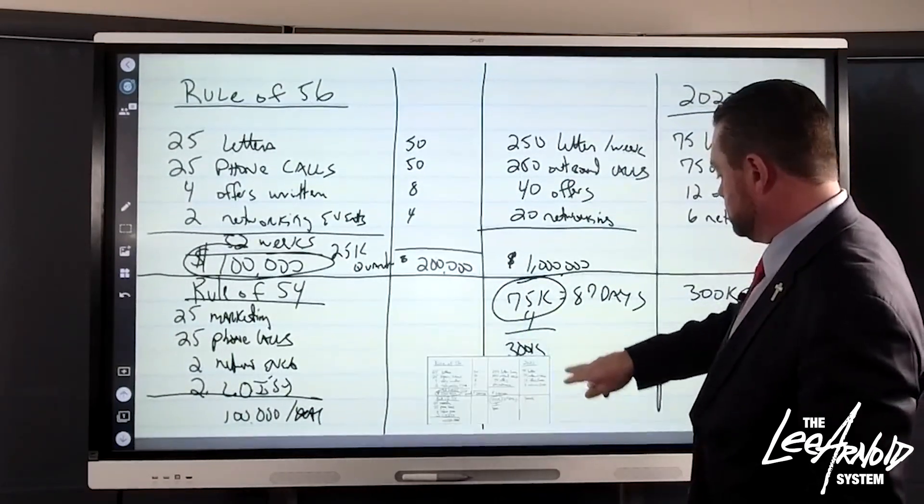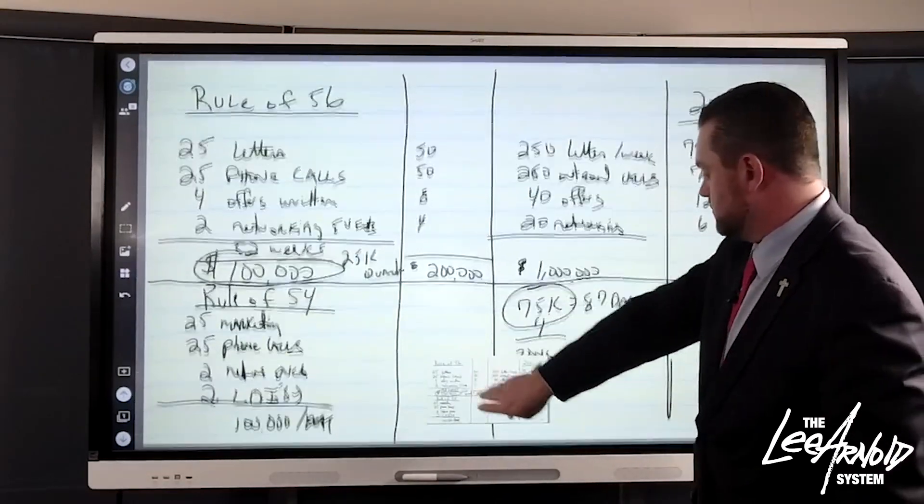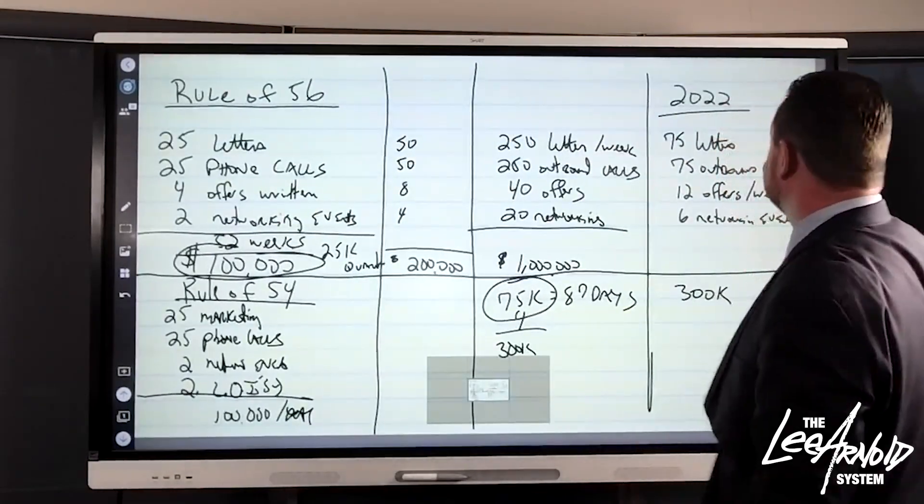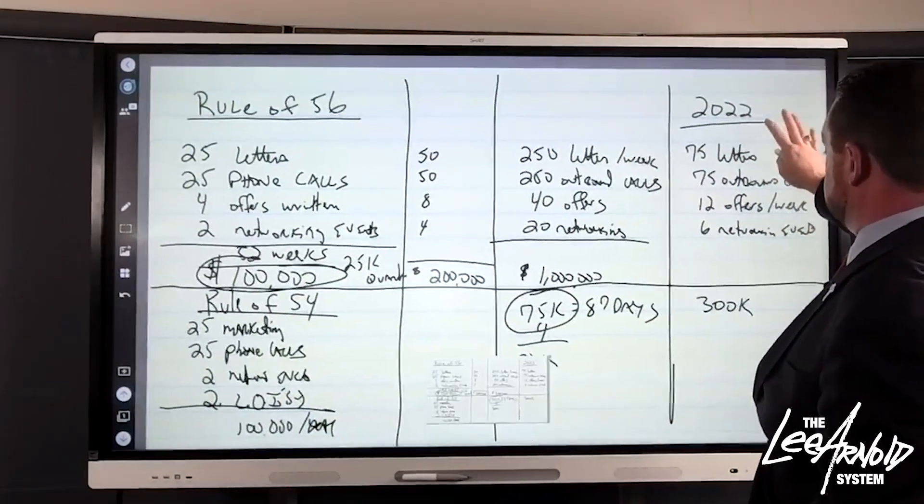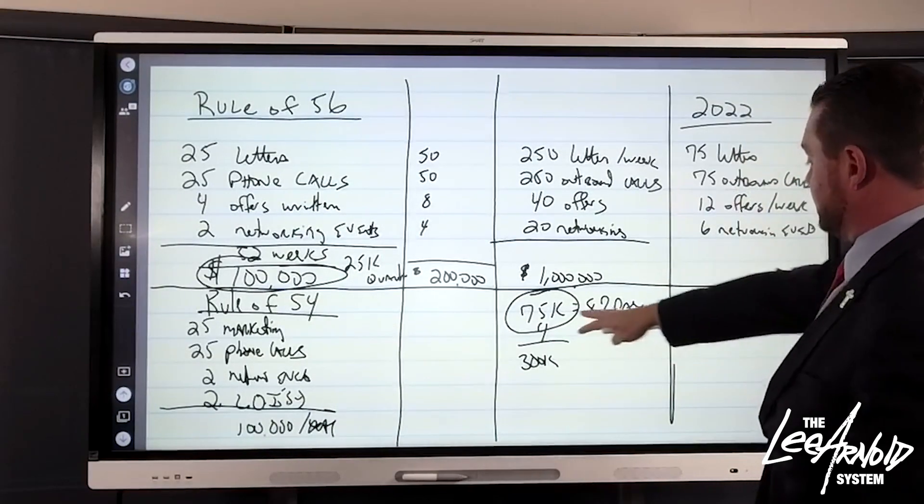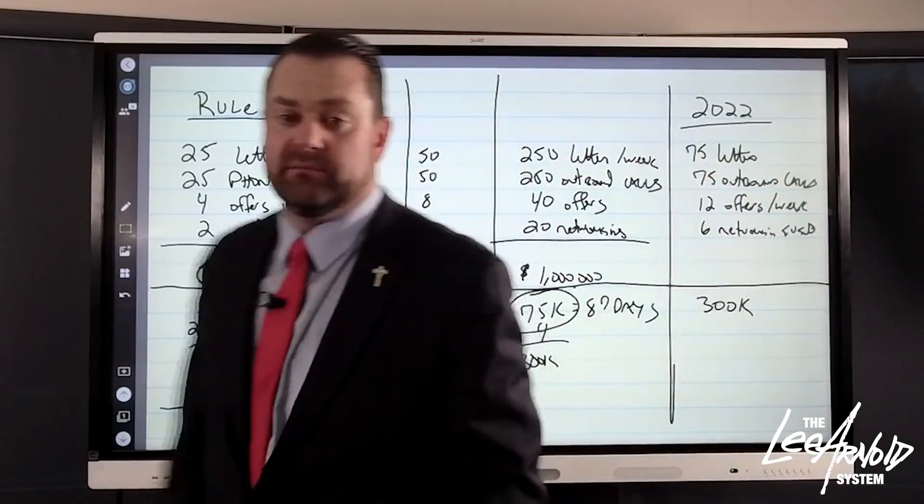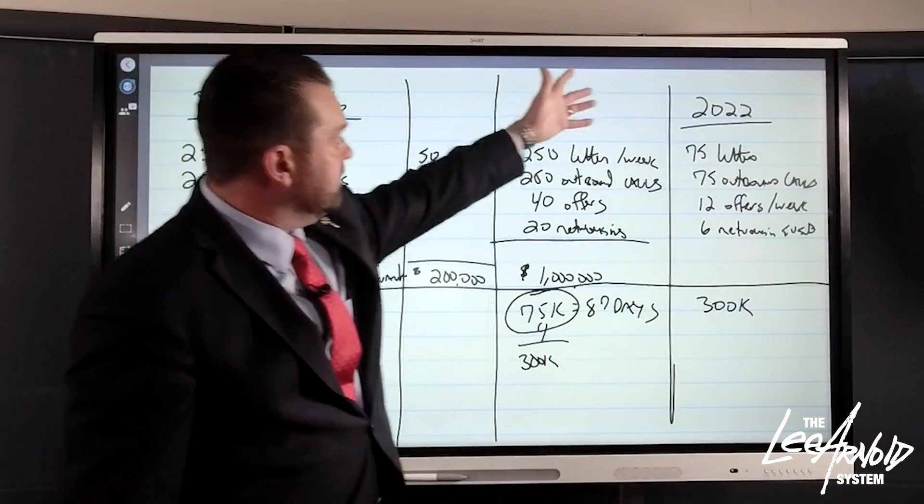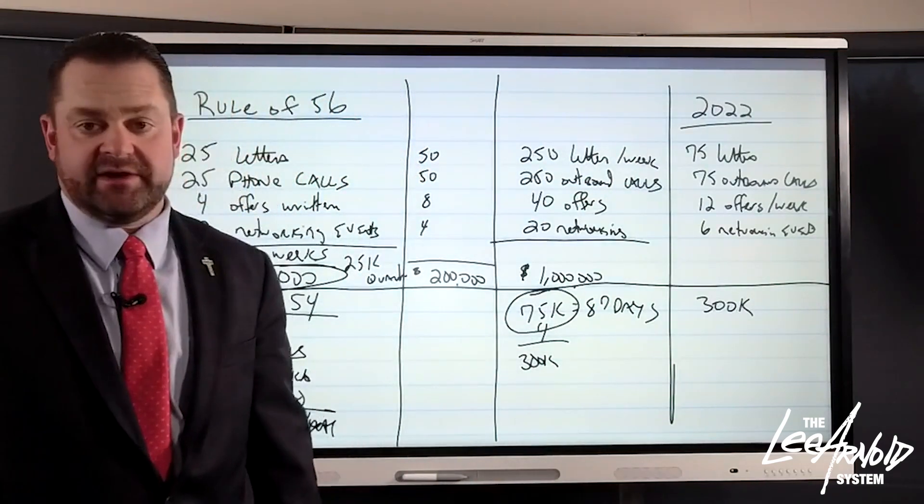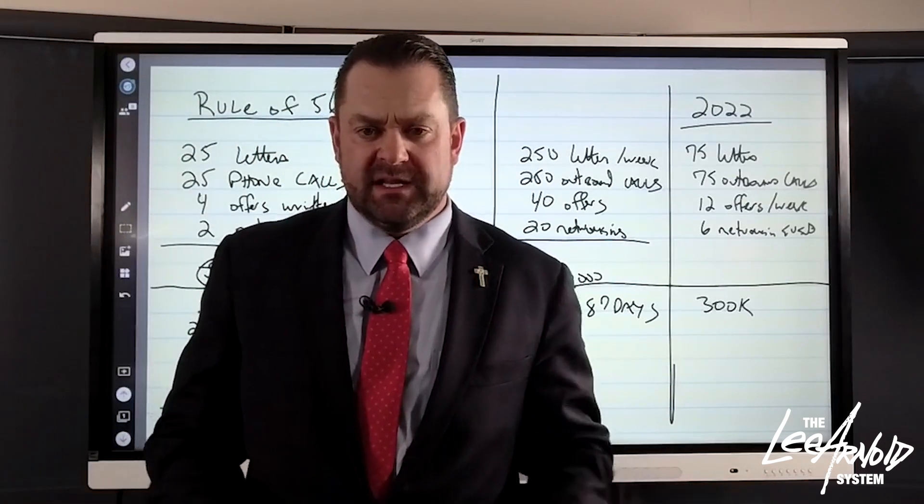Alright, go away. I don't know how to make that go away. Anyway, okay, so here's what we got. Ken, you're the one who put $75,000 in the next 87 days. So for 2022, you need to generate $300,000 in income. You're going to do it by 75 letters, 75 outbound calls, 12 offers a week, and six networking events. Simple, right?